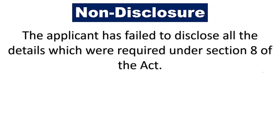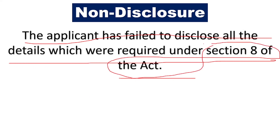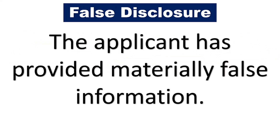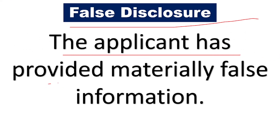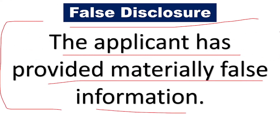The next ground is non-disclosure. If the applicant has failed to disclose all the details required under Section 8 of the Act, which specifies basic information required to be filed by the applicant, then the patent application will be eligible for pre-grant opposition. If the applicant fails to provide all the details, or if they have filled in false information, then it is also suitable for pre-grant opposition.